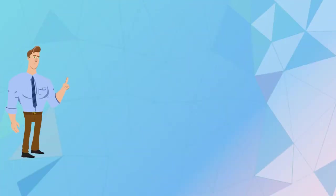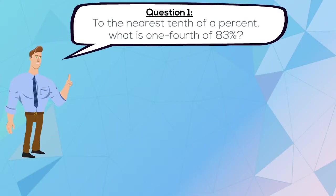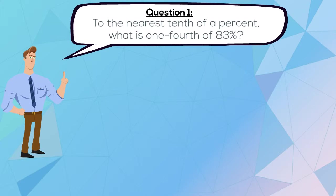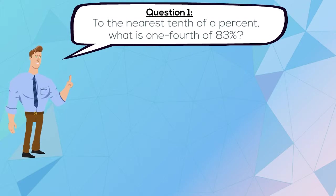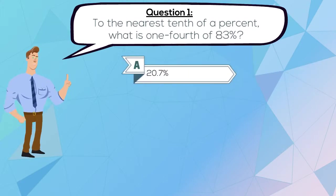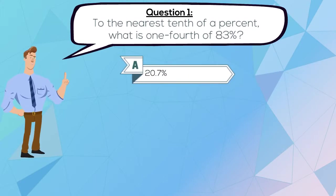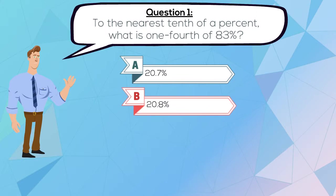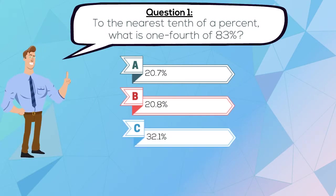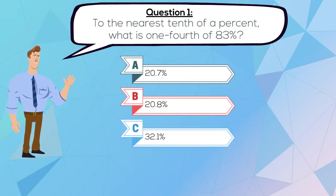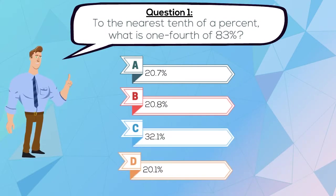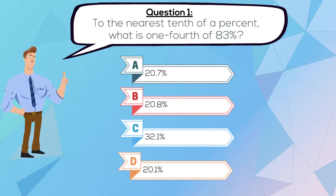Question 1. To the nearest tenth of a percent, what is one-fourth of 83%? A. 20.7%, B. 20.8%, C. 32.1%, or D. 20.1%.